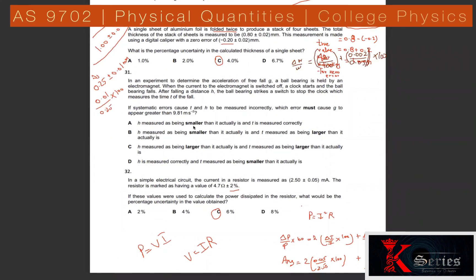Question 32: Current = 2.50 mA, resistor = 4.7 Ω ± 2%. Power P = I²R. Power of I is 2, power of R is 1. Percentage uncertainty = 2×(0.05/2.50)×100 + 2% = 4% + 2% = 6%.